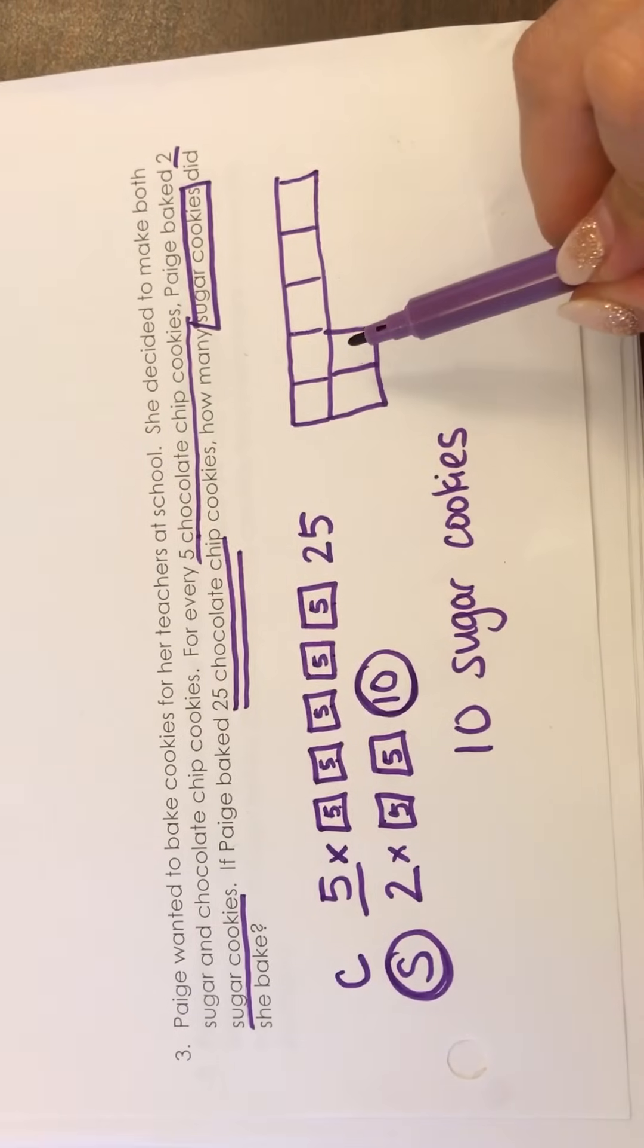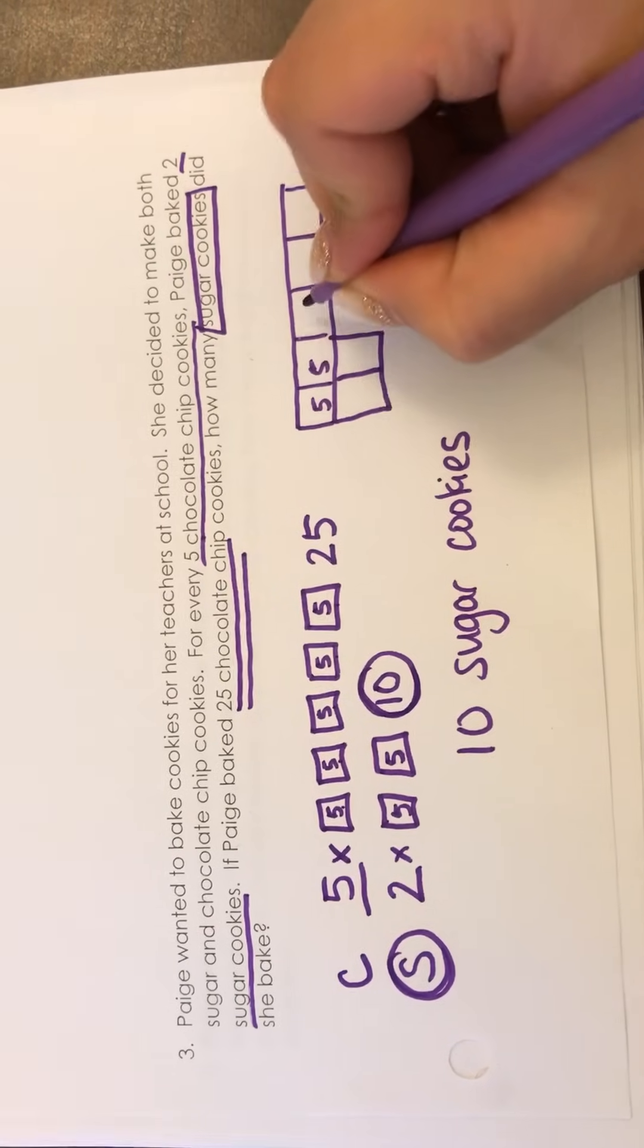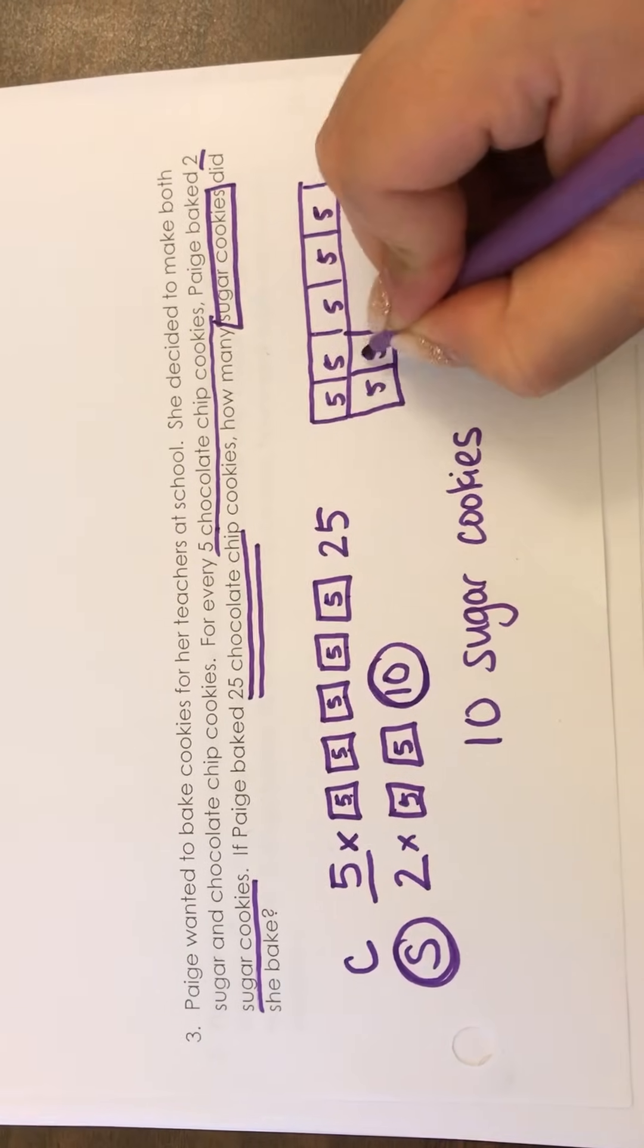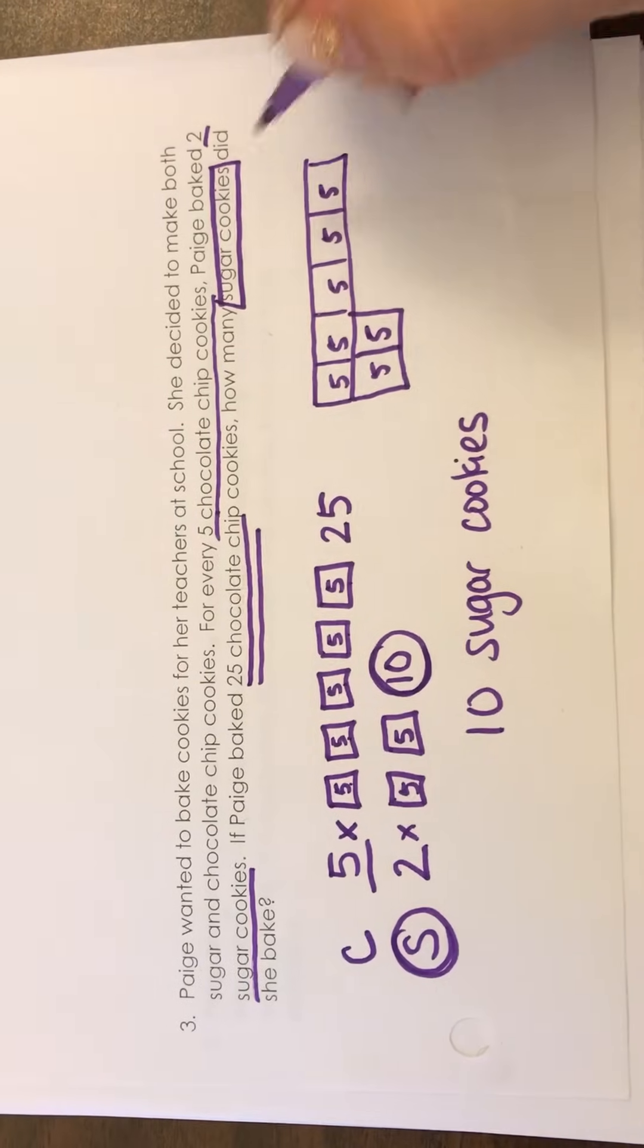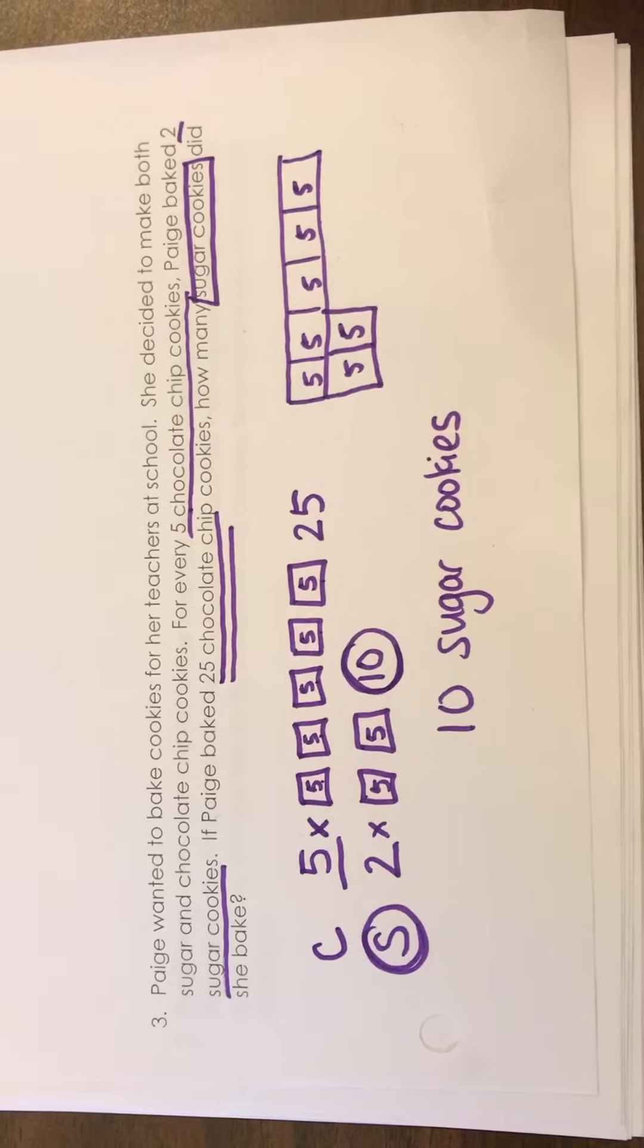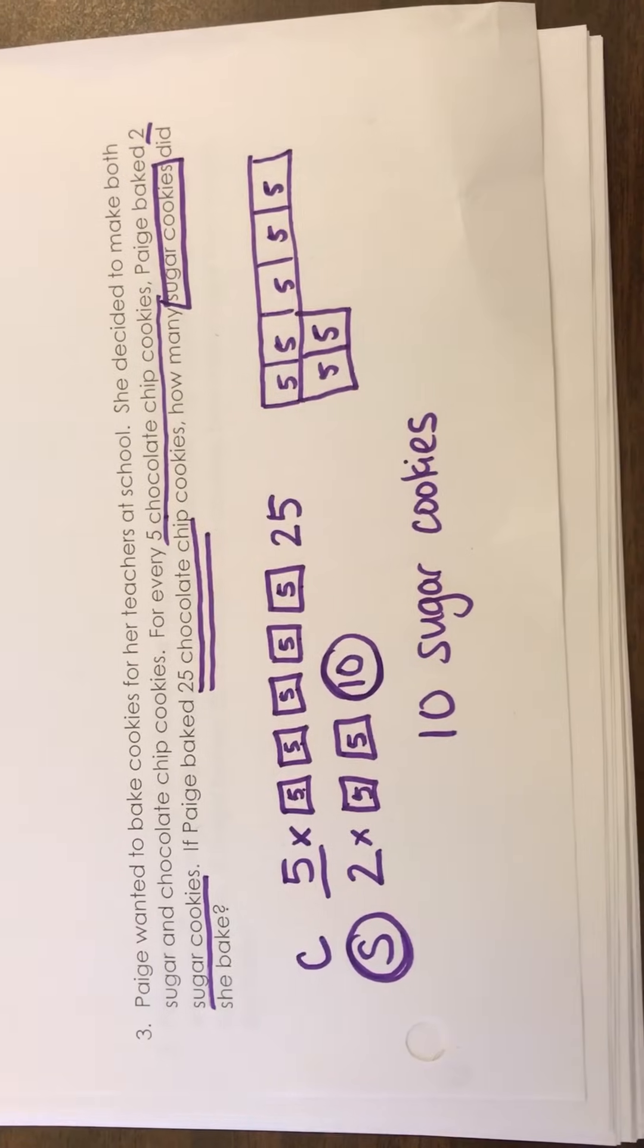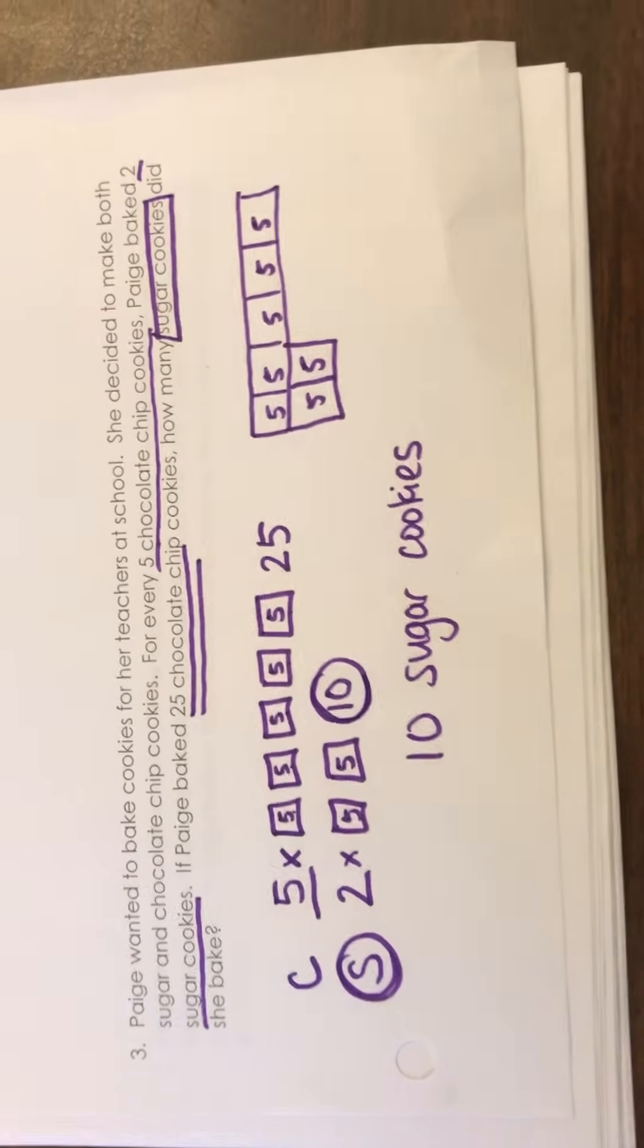And if you were to use these boxes that are connected it would be the same exact thing. You would have your fives in all the boxes. It's just that there it's formatted different. It's just connected, the boxes are all connected over there. So in this video I showed you how to solve a ratio problem using tape diagrams.